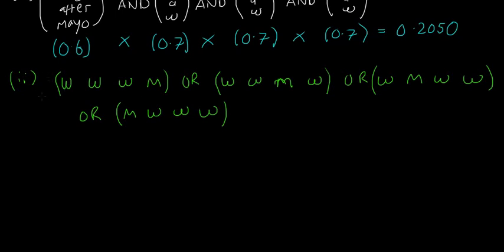For each case, remember she always gets mayo on Monday. In case one (W-W-W-M): wedges-after-mayo, wedges-after-wedges, wedges-after-wedges, mayo-after-wedges. Case two (W-W-M-W): wedges-after-mayo, wedges-after-wedges, mayo-after-wedges, wedges-after-mayo. Case three (W-M-W-W): wedges-after-mayo, mayo-after-wedges, wedges-after-mayo, wedges-after-wedges. Case four (M-W-W-W): mayo-after-mayo, wedges-after-mayo, wedges-after-wedges, wedges-after-wedges.